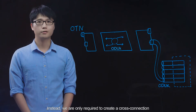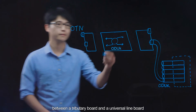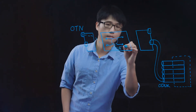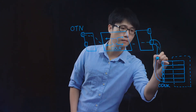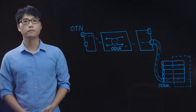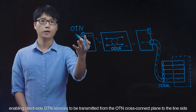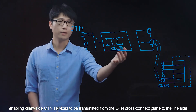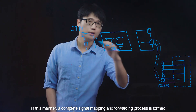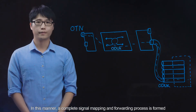Instead, we are only required to create a cross connection between the tributary board and a universal line board, enabling client-side OTN services to be transmitted from the OTN cross-connect plane to the line side. In this manner, a complete signal mapping and forwarding process is formed.